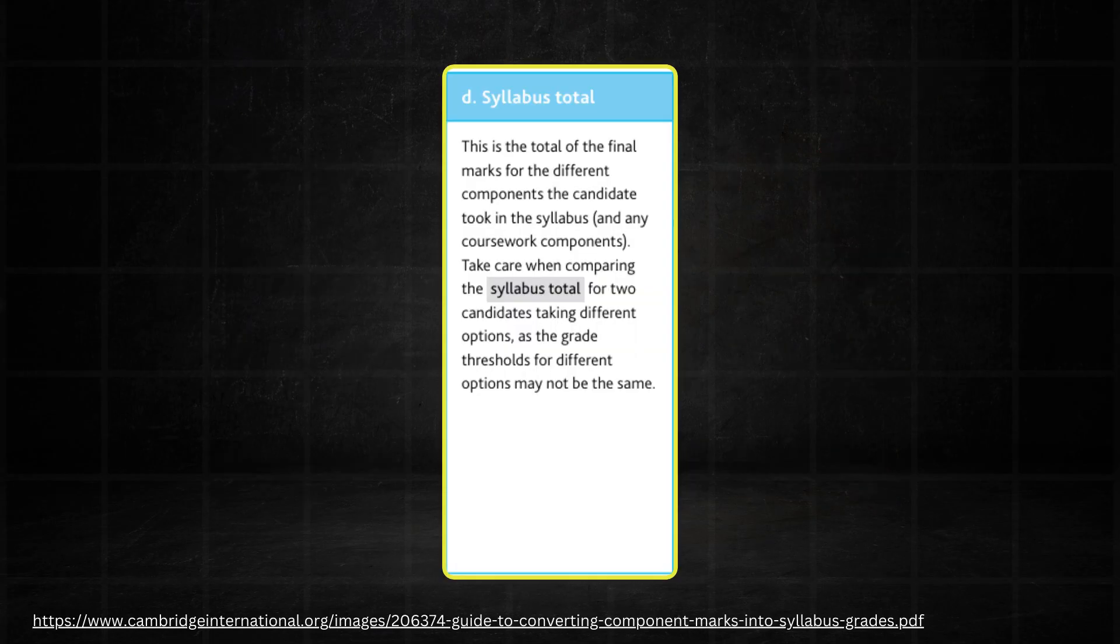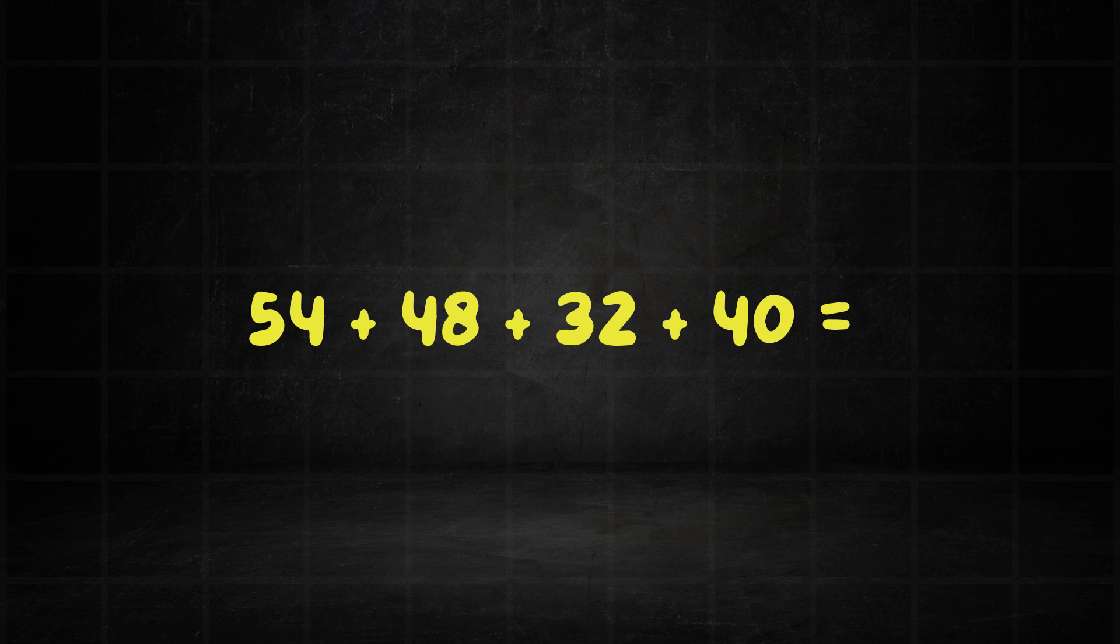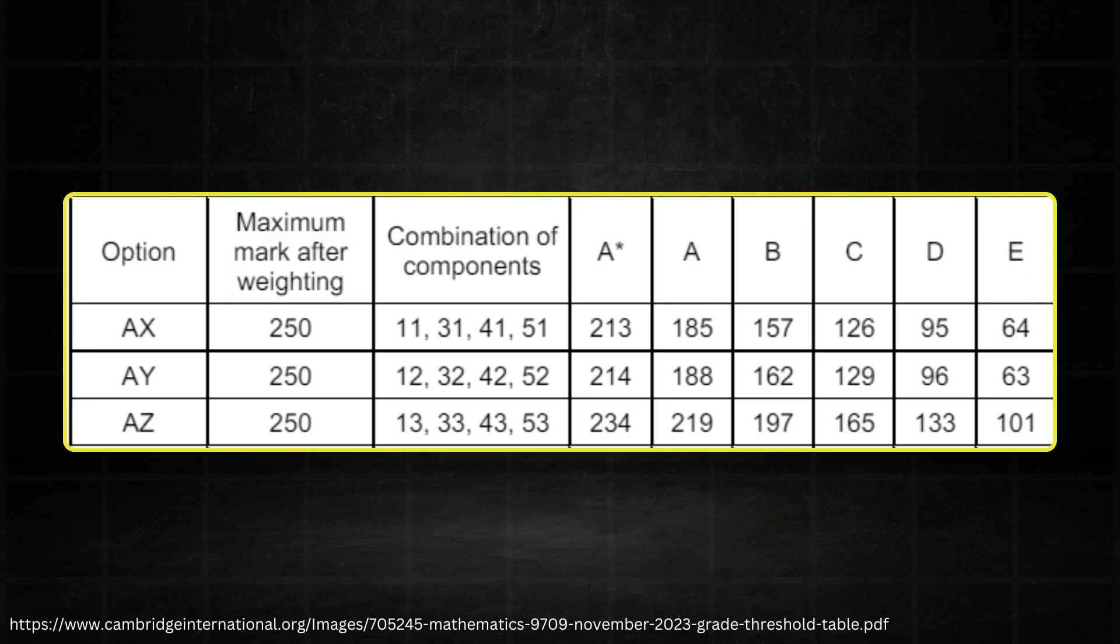Now let's add them all up to get Bob's syllabus total. So that's 54 plus 48 plus 32 plus 40, and this gives Bob a syllabus total of 174 marks. Now, to determine the mark that we show on Bob's result slip, let's compare his syllabus total to the grade thresholds for November 2023.